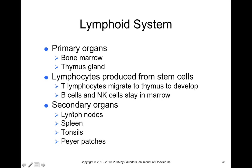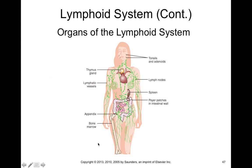Other secondary organs like lymph nodes, spleen, tonsils, and Peyer's patches — found in the intestine — are also involved in immune defense because they contain high concentrations of lymphocytes. You'll find a lot of T cells, B cells, and natural killer cells in these locations. This slide shows a general overview of the lymphatic system.